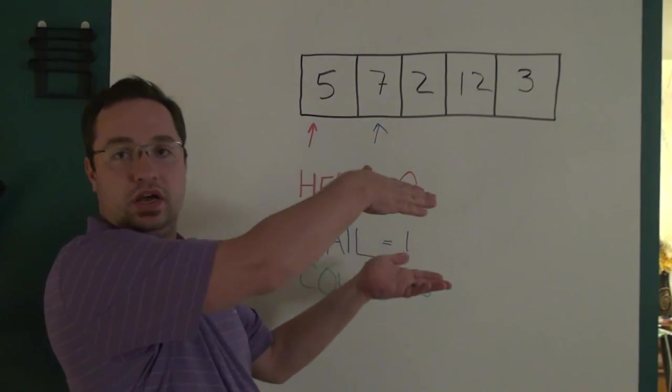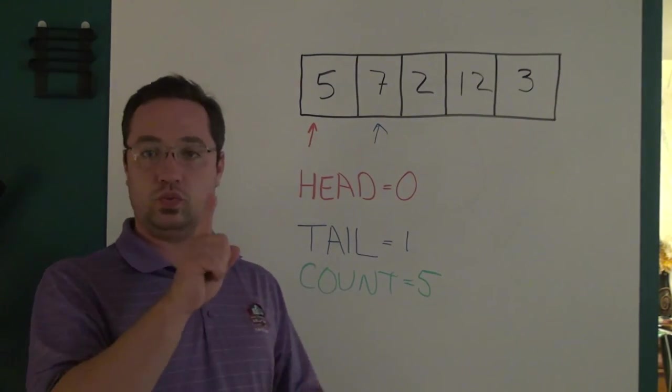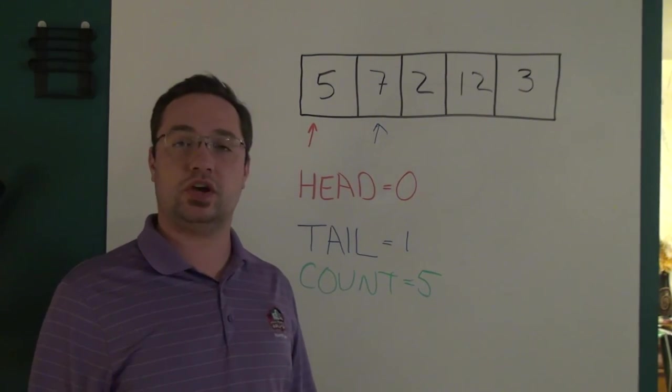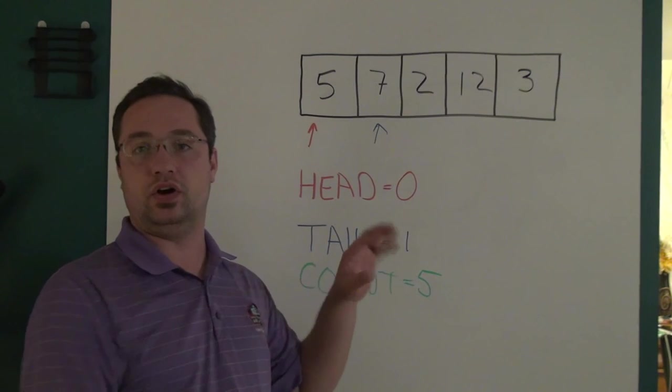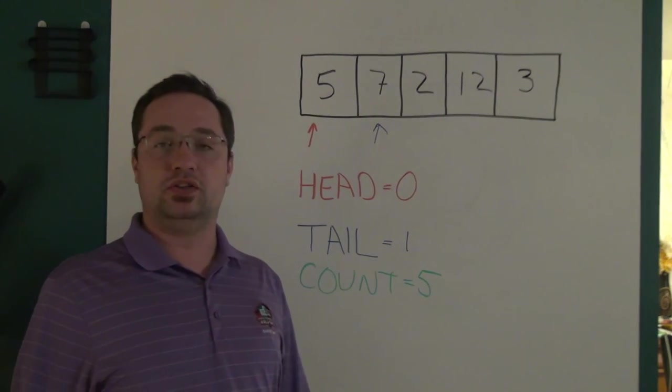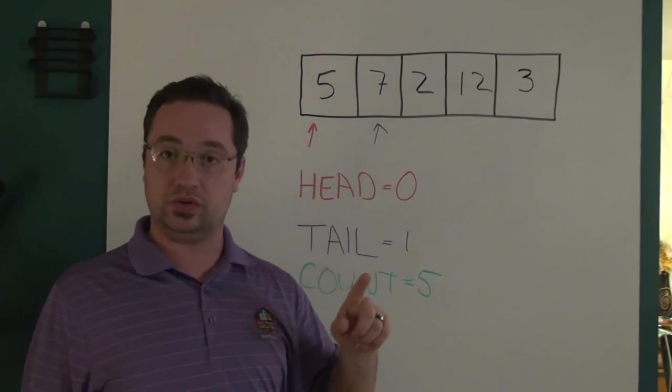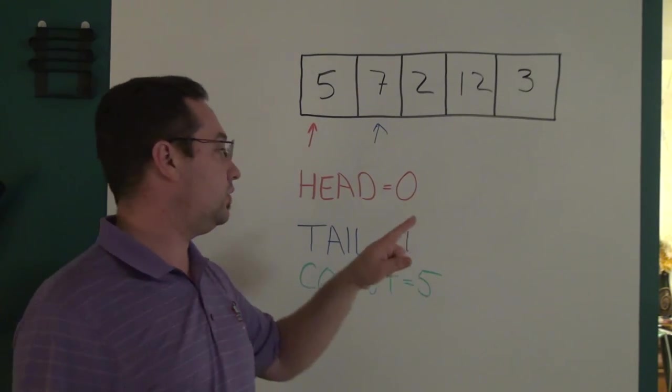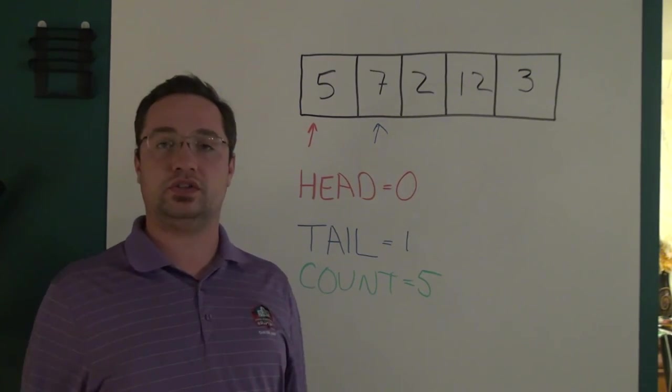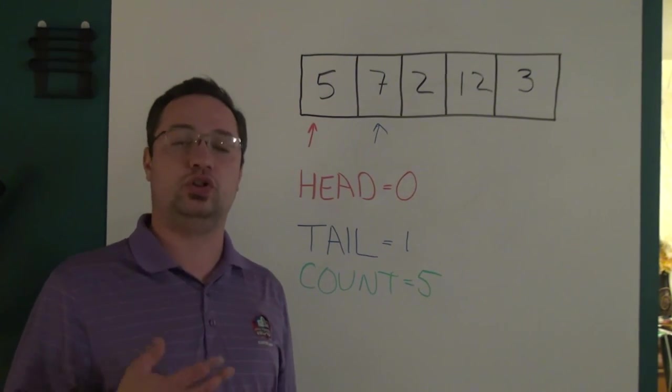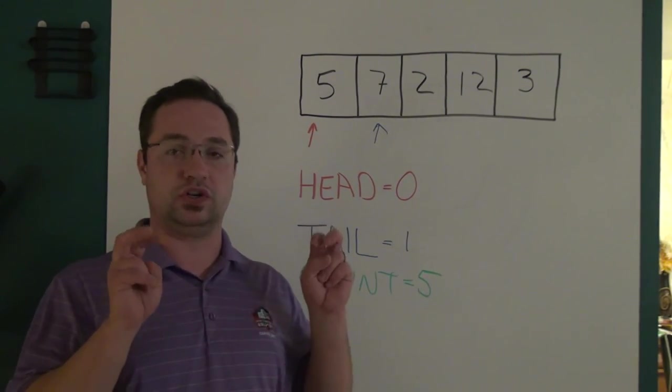We talked about the function that puts data into the buffer, and we've talked about the function that gets data out of the buffer. There's one more function I'd like to talk about, and that function is commonly referred to as peak. Peak is very similar to the get data out of the buffer function. The difference being is that peak retrieves the data out of the buffer without effectively erasing it, without incrementing the tail and decrementing the count. The reason for this is sometimes you need to take a quick look at the data to see what it is before you use it and lose it, so to speak.